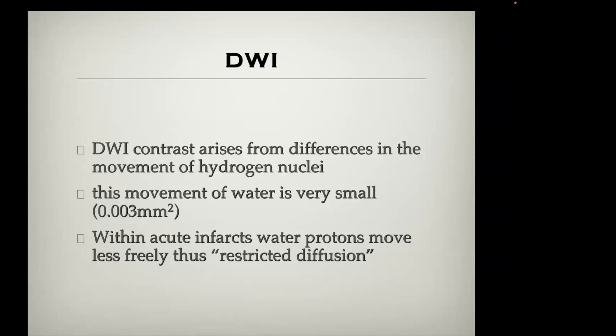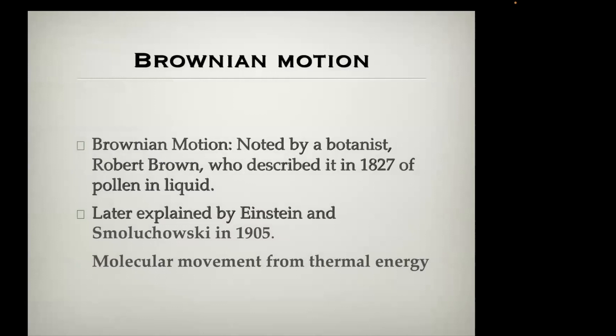Within acute infarcts, the protons move less freely — we refer to this as restricted diffusion. There's less movement in the acute infarct. The theory is that this is due to the influx of extracellular water through the injured cell membrane into the infarct itself.